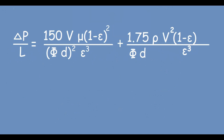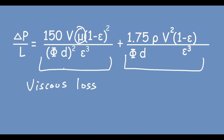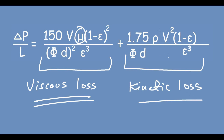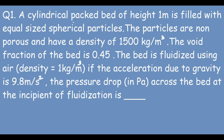An important point: the Kozeny-Karman part of the Ergun equation accounts for viscous loss, because it contains the viscosity term μ. The Burke-Plummer part accounts for kinetic energy loss, because it contains v² — the velocity squared. This is a good way to remember the distinction between the two terms.